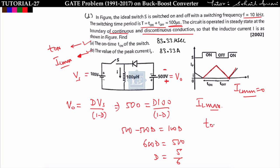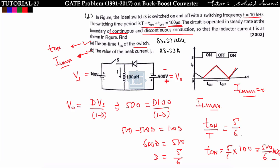Now find t_on. We know d = t_on / T = 5/6, so t_on = (5/6) × 100 microseconds = 500/6 microseconds = 83.33 microseconds.